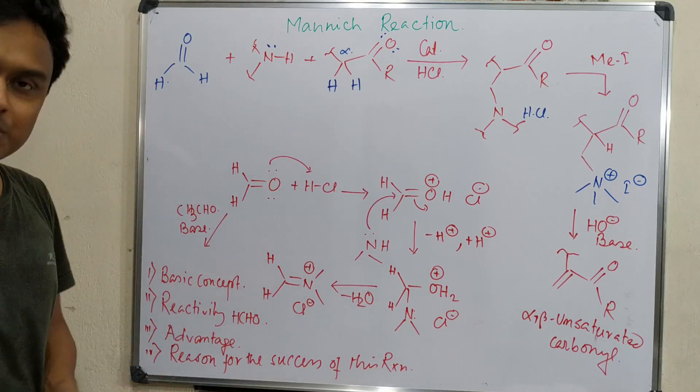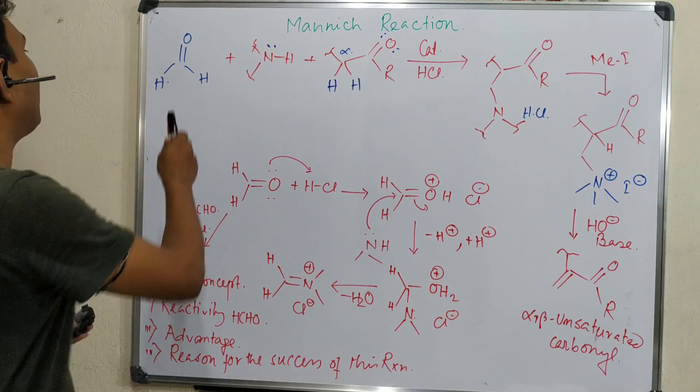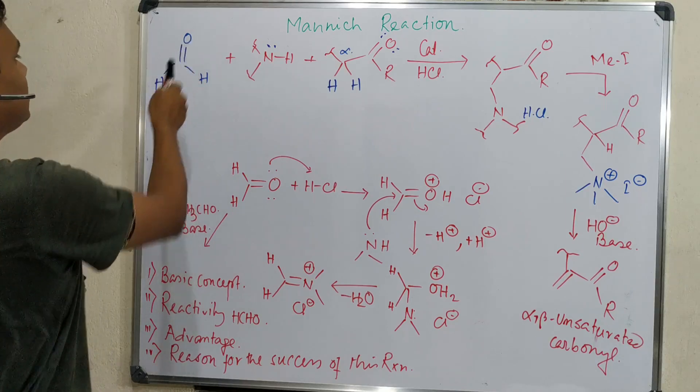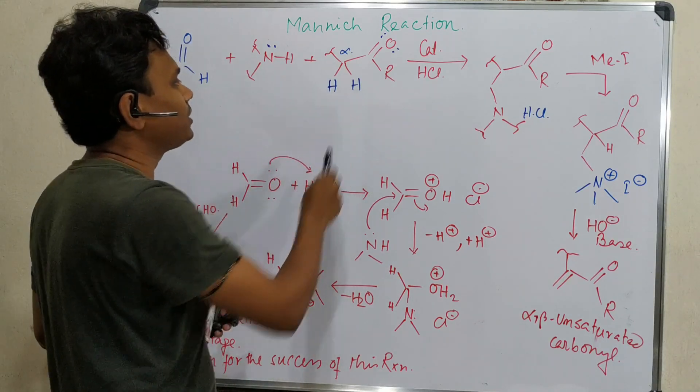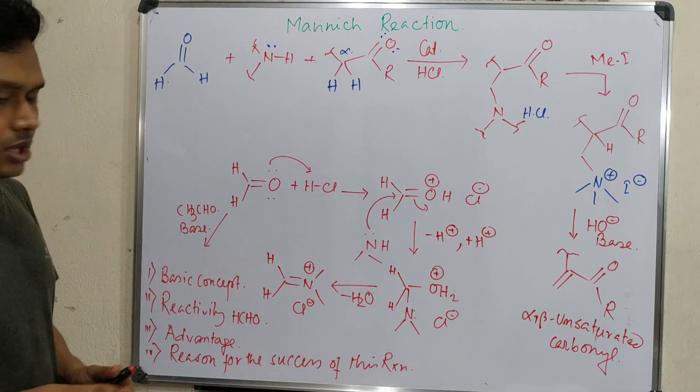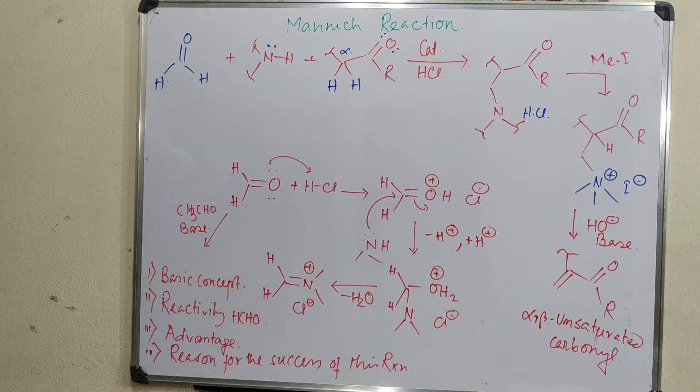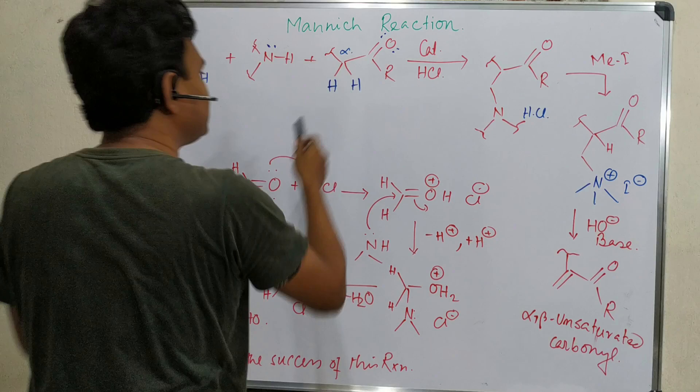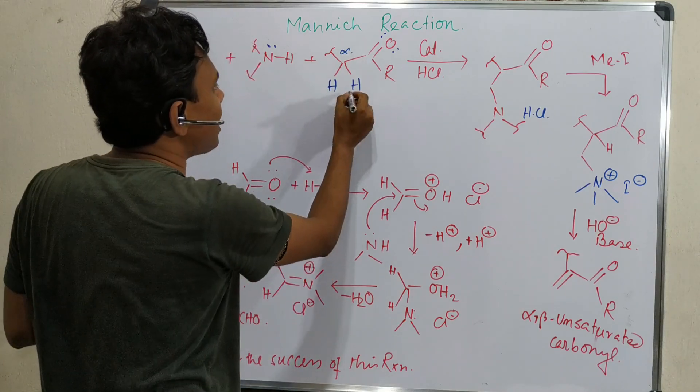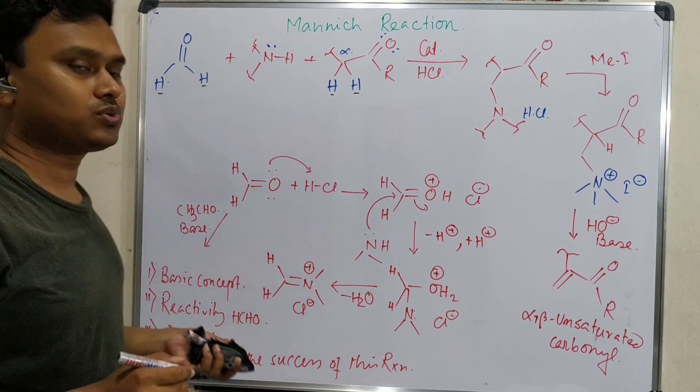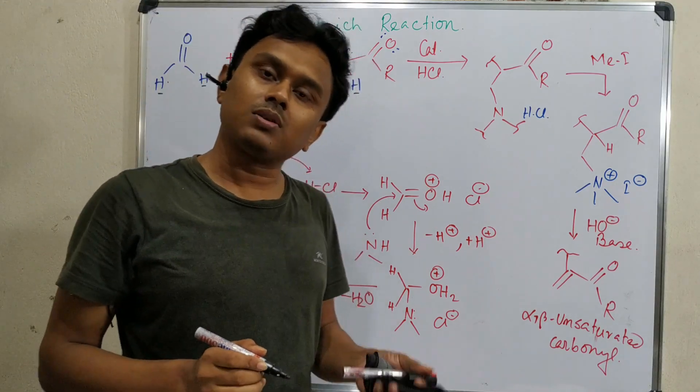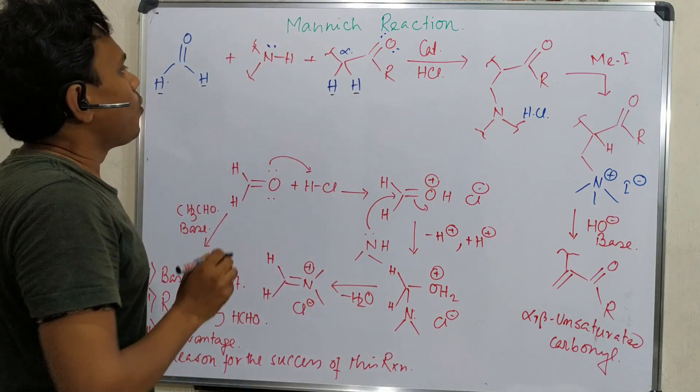Mannich reaction means the reaction of a carbonyl compound, formaldehyde, and alpha hydrogen containing acid or aldehyde. So apparently it may look like a cross aldol condensation reaction. One compound has alpha hydrogen and the other is not having any alpha hydrogen.